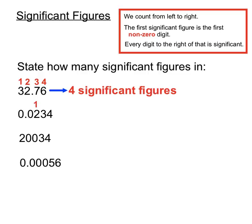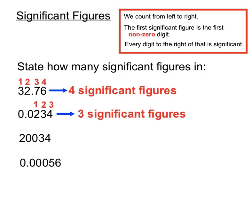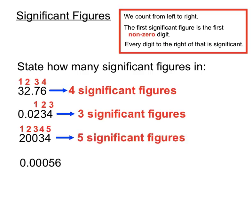For the second number, we don't start counting our significant figures until we hit the first non-zero digit. That two is the first non-zero digit we hit, and we start counting our digits there — so that has three significant figures. Once we start counting where the two is, every other digit, whether it's a zero or not, can be considered to be significant. So those middle zeros, even though they're zeros, are after the first non-zero digit and are considered significant. So there's a total of five significant figures in 20,034.